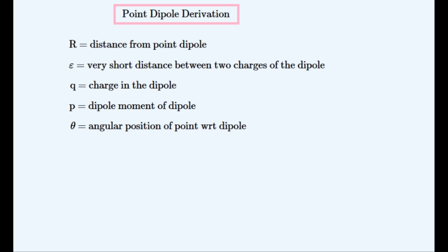Here are some variables associated with the point dipole. R is the distance of the observer from it, and epsilon is set to be the separation distance between the two charges, which will tend to zero. I decided to change its name from x to epsilon, because it is going to be an infinitesimally small number. Q is the electric charge on each particle, P is the dipole moment, and theta is the angular position of the observer from the dipole.